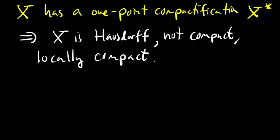The conclusion is that if X has a one-point compactification X*, then X must be Hausdorff, not compact, and locally compact. These three necessary conditions are actually sufficient for X to have a one-point compactification, and you can construct it by putting in an extra point called infinity, defining the open subsets containing infinity to be the complements of compact subsets of X, and checking that this defines a topology and that the inclusion of X into X* is a compactification.